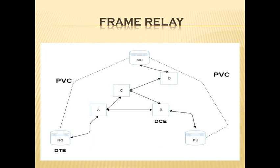Frame Relay is an example of packet switch technology. The following techniques are used in packet switching: variable length packets and statistical multiplexing. Variable length packets are used for more efficient and flexible data transfer. These packets are switched between various segments in the network until the destination is reached. Statistical multiplexing techniques control network access in a packet switch network, accommodating more flexibility and more efficient use of bandwidth.